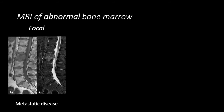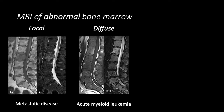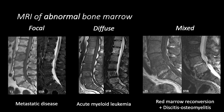Bone marrow signal abnormalities can be focal, such as in this patient with metastatic disease to the L2 vertebral body; diffuse, such as in this patient with acute myeloid leukemia; or mixed, as in this patient with red marrow reconversion due to chronic illness, as well as superimposed discitis osteomyelitis at the L4-L5 level, where we see increased signal intensity in the disc and within the vertebrae on STIR, with corresponding decreased signal on the T1-weighted image.